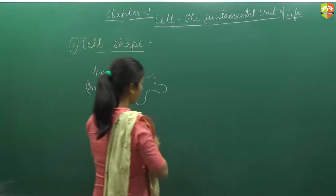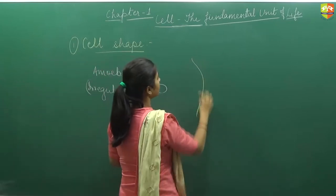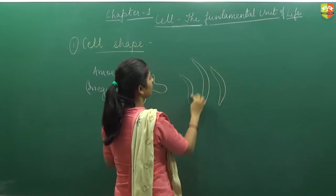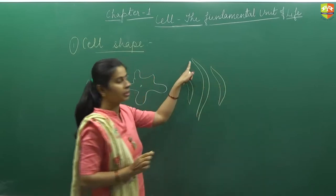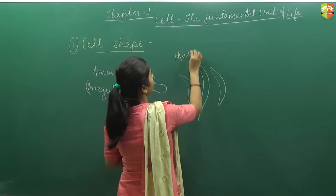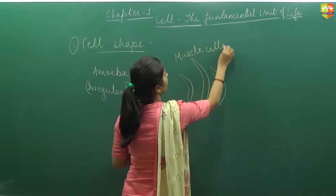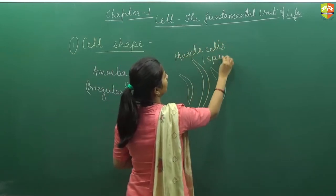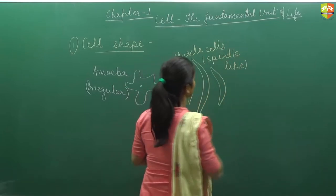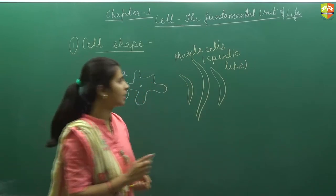Now if we talk about our body muscle cells, the muscle cells are wider in the middle and have the tapering ends. These are muscle cells. The shape of muscle cells is spindle-like.